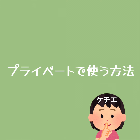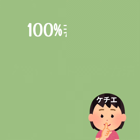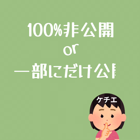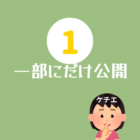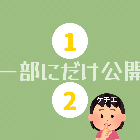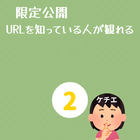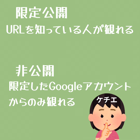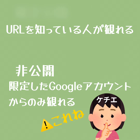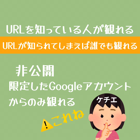YouTubeをプライベートで使う場合、完全に非公開もできますが、他の方と動画を共有する方法として2つあります。1つは限定公開といって、URLを知っている人だけがアクセスできる方法。もう1つは、非公開のまま、限定したGoogleアカウントからのみアクセスを許可する方法です。誤解されやすいのですが、限定公開は名前は限定とつきますが、URLが拡散されてしまえば